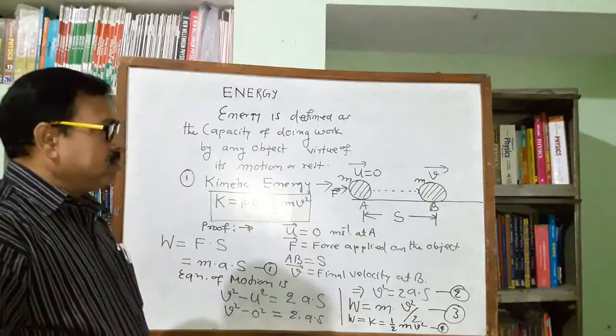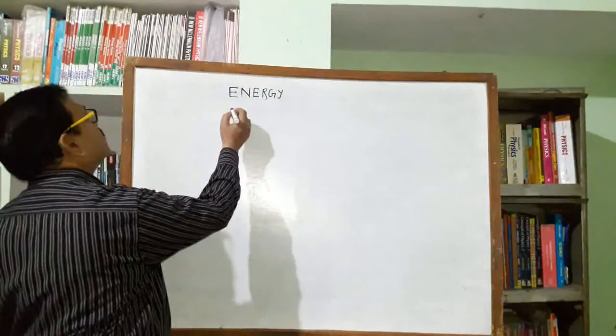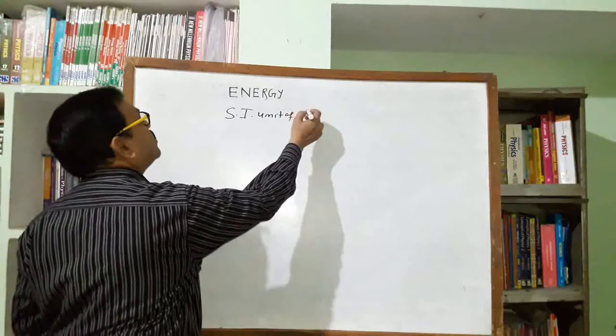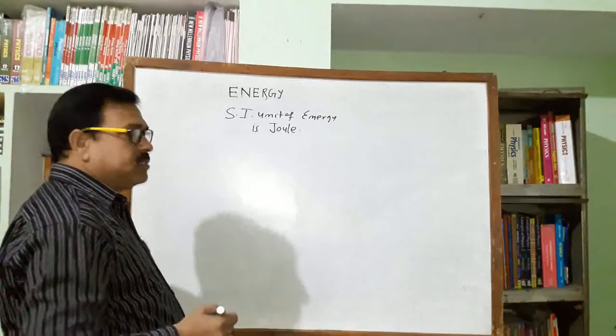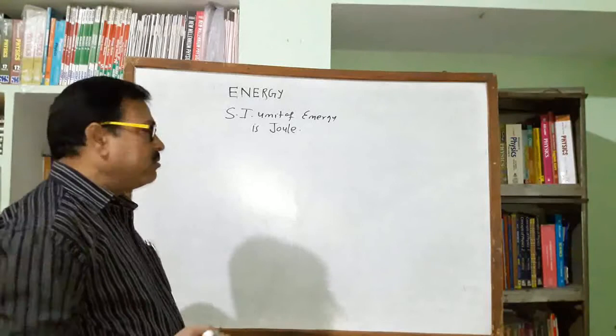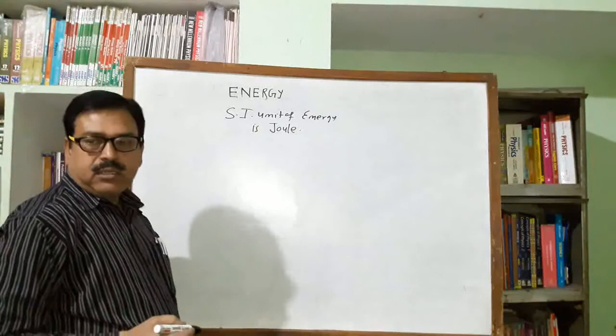The SI unit of energy is joule. One joule is that amount of energy which is stored by any object due to its capacity of doing work. So joule is the SI unit of energy as well as work.